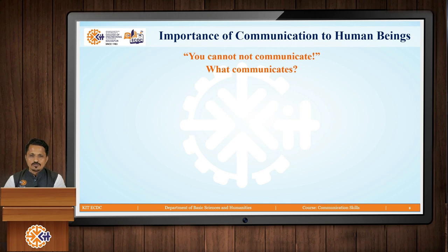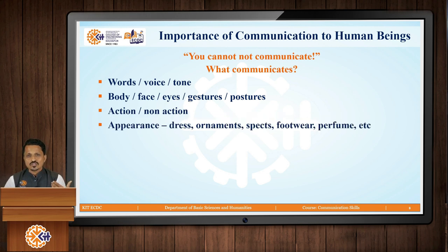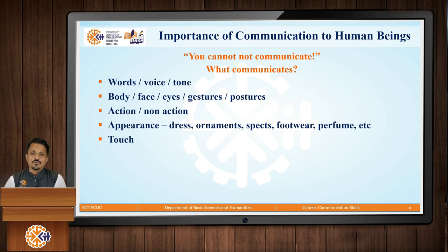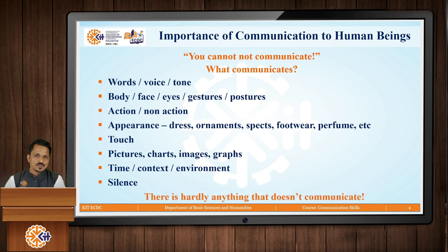What are the things that keep communicating? We communicate through words, voice, tone, body, face, eyes, gestures, postures, actions, non-action, appearance, dress code, ornaments, specs, footwear, perfume — everything communicates something. Touch also communicates: when a teacher encourages a student by tapping their back, that touch gives encouragement. Pictures, charts, images, graphs, time, context, environment — everything communicates. Even your silence speaks louder than your words.